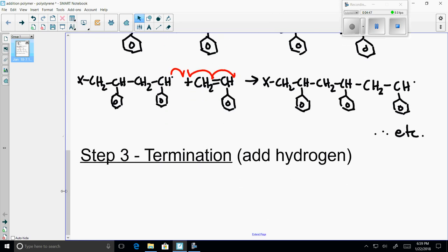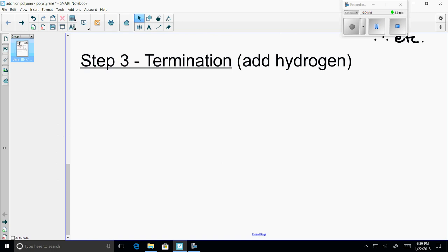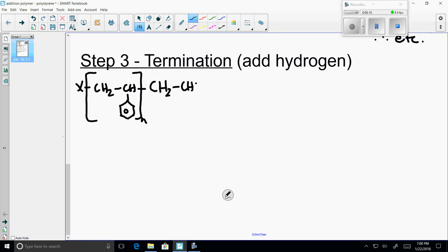This material can self-terminate or we can deliberately show the termination by adding hydrogen. We bracket the first mer, put an N outside, and then we show the last mer in free radical form.